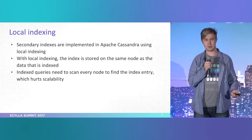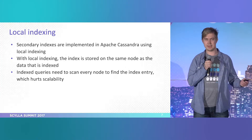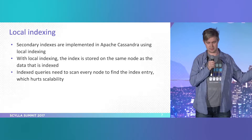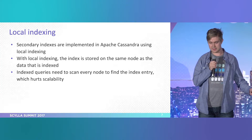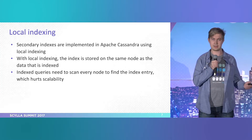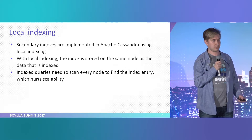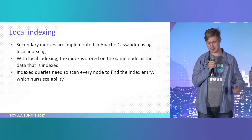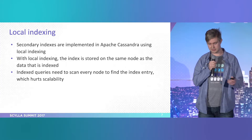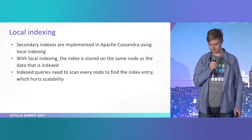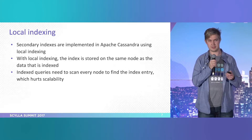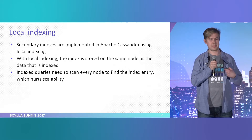For a high-cardinality case where you have a lot of unique values getting indexed — like an email address — what Cassandra actually has to do is query all the nodes to first figure out where the index is, and only after that can it fetch the data you're interested in. If you actually know the partition key, that can be really efficient — you just use the local index to change the ordering.